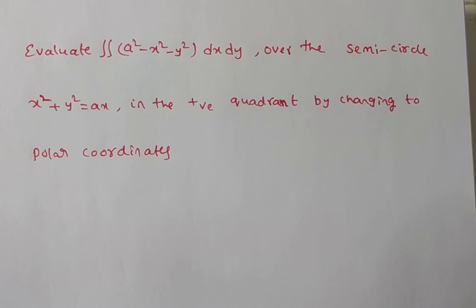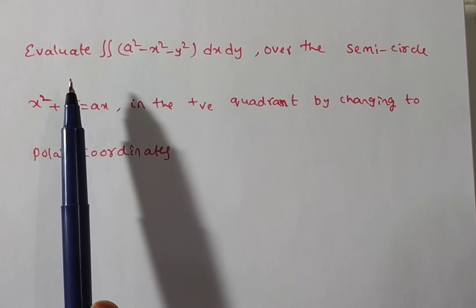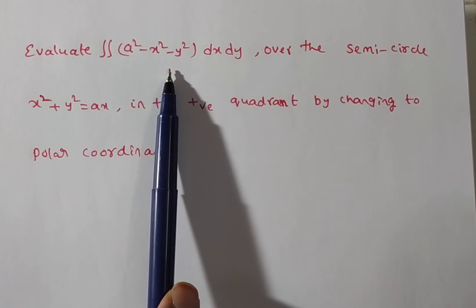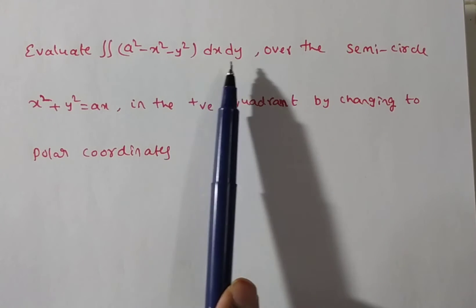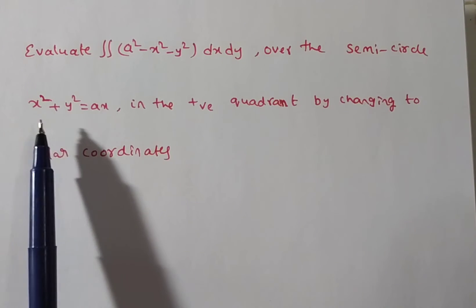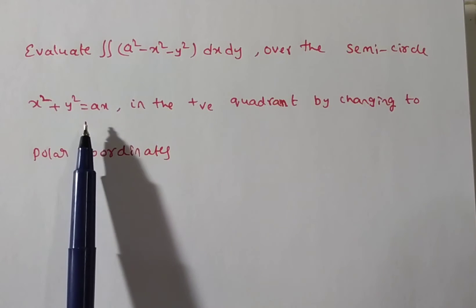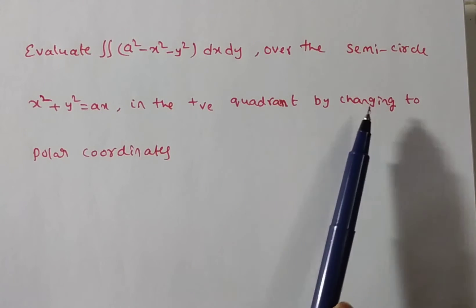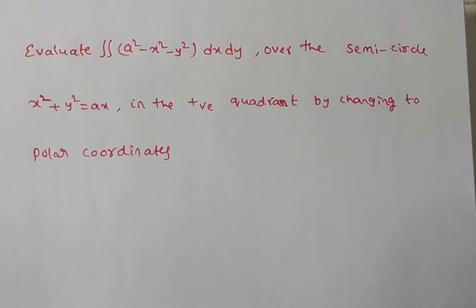Friends, in this video we are solving a problem on multiple integrals. The given problem is: evaluate the double integral of (a² - x² - y²) dx dy over the semicircle x² + y² = ax in the positive quadrant, by changing into polar coordinates.